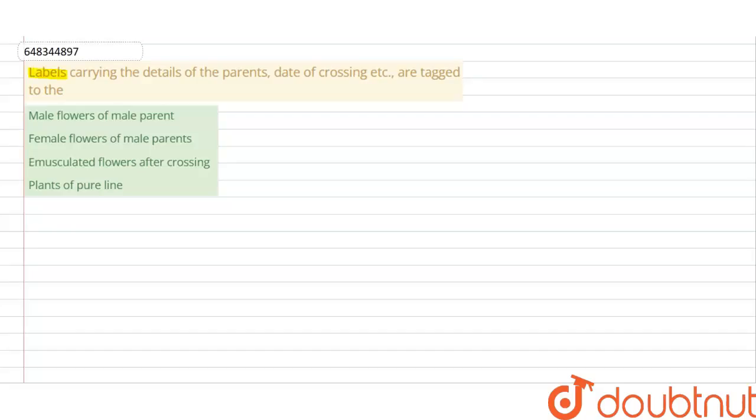The question asks about labels carrying details of parents, date of crossing, etc., tagged to certain options. The options are: male flower, male parent, female flower, male parent, emasculated flower after crossing, and plant of pure line. The question is asking about which item these labels are tagged to.